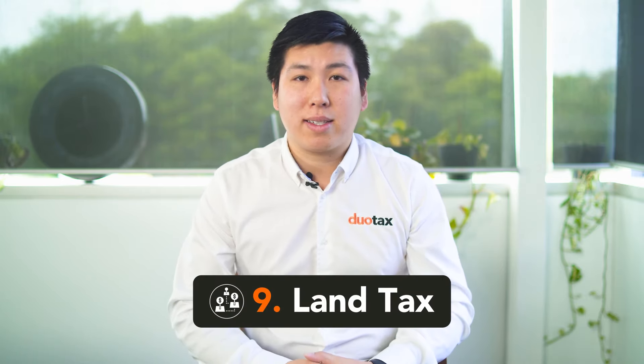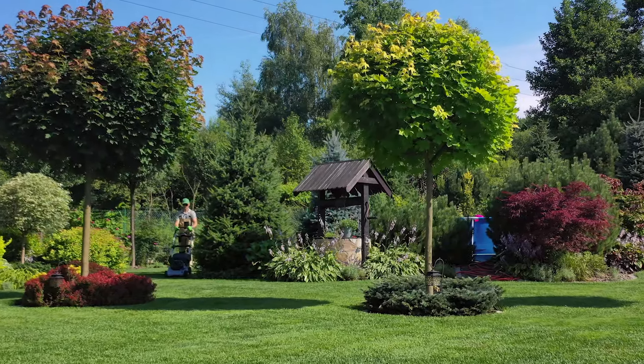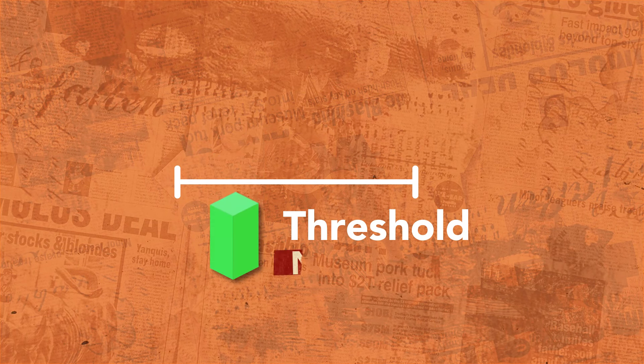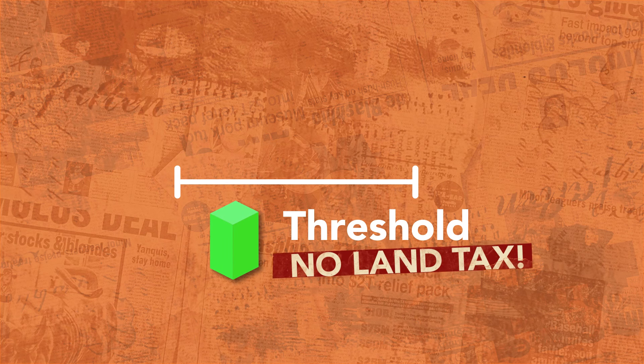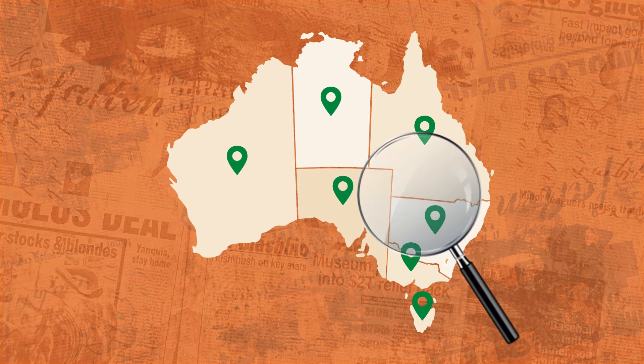Last but definitely not least is land tax. Honestly, of all the expenses on the list, this is the most unaccounted-for expense amongst investors. Land tax is a state tax that you have to pay each year on what's called the unimproved value of the land — the property's value without taking into account any improvements such as buildings, landscaping, paths, and fences. Generally, there is a threshold, so if the unimproved value of the land falls below the threshold, you won't have to pay land tax. However, each state has their own threshold amounts, so you'll have to check the relevant revenue office website for more information, or your accountant can tell you. The Northern Territory is the only territory or state that doesn't require property investors to pay land tax, but I've left links to the other states in the description box below.